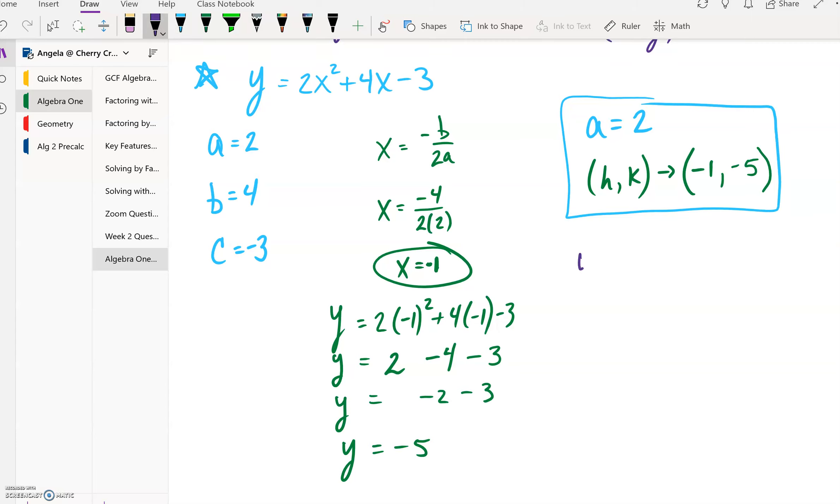So last but not least, here is your formula in vertex form: y = 2(x - (-1))² - 5, so it's going to be 2(x + 1)² - 5. And that is an example of how to go from standard form to vertex form.